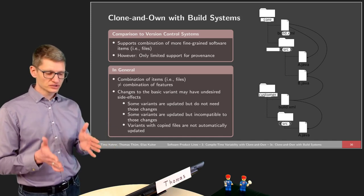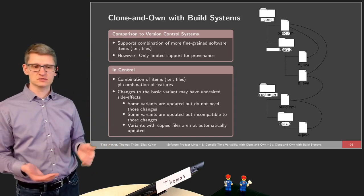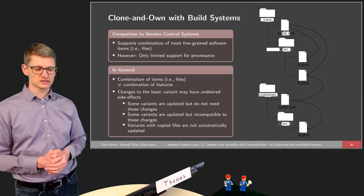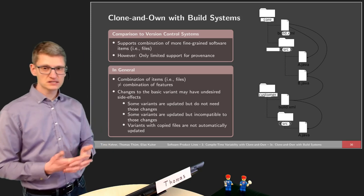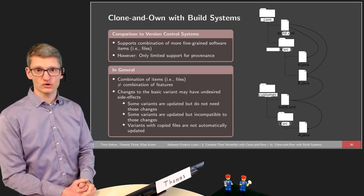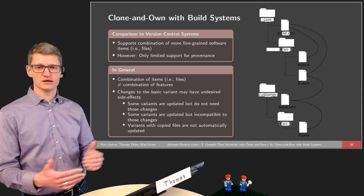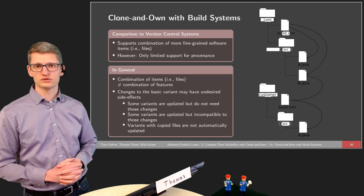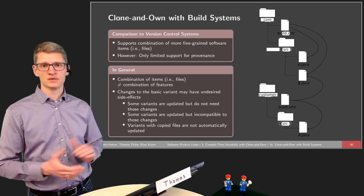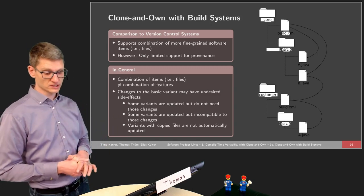With software configuration management, we can combine certain items — in most cases just files or folders. But this is not the same as combining features. We have already seen for the graph implementation that some features require insertions somewhere inside the code. If I want weighted edges, I need to extend the edge class with additional methods or additional statements within certain methods.